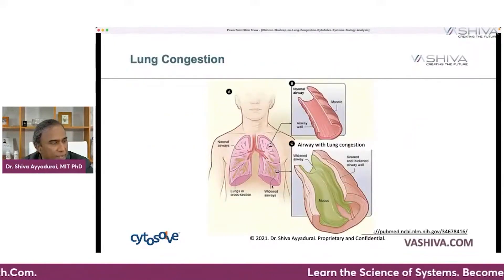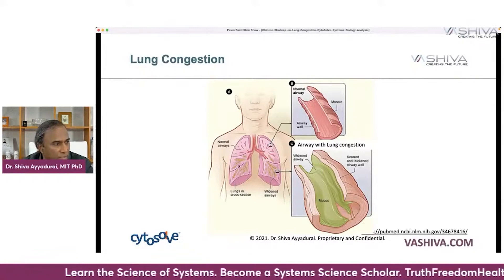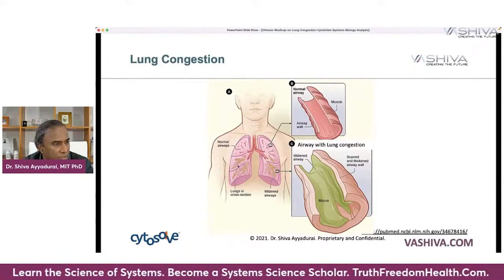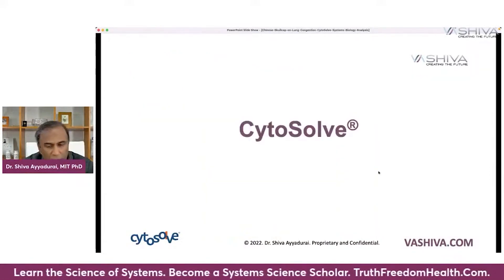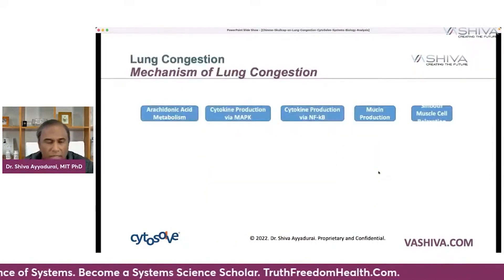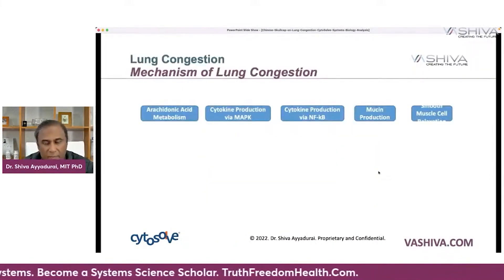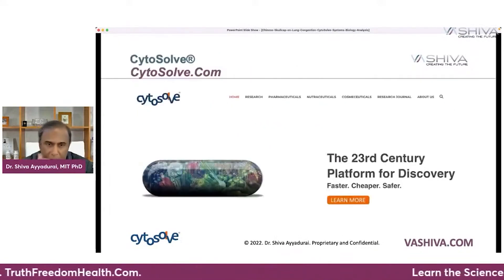At a high level, here are your lungs — the left and the right. Here are normal air pathways, and here are congested pathways. The way we understand these pathways and how Skullcap affects them is using a tool called Cytosol.